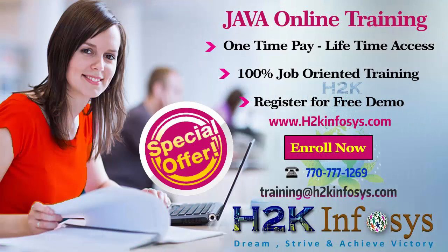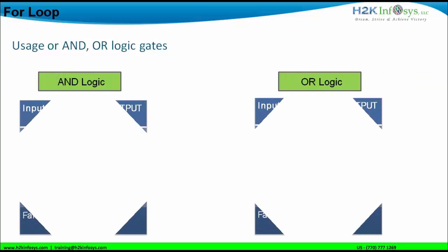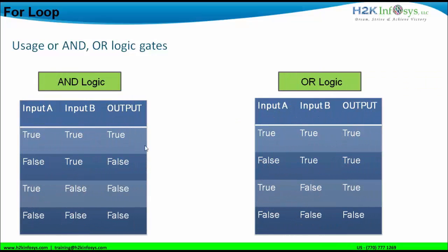The concept of AND logic or OR logic — this is the AND logic or OR logic truth table. The AND logic says that if both the conditions are true, if both the inputs are true, the output is true; otherwise the output is false. The OR logic says that if one of the conditions is true, one of the input conditions is true, the output will be true for OR logic.